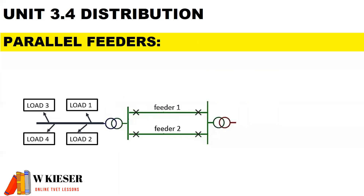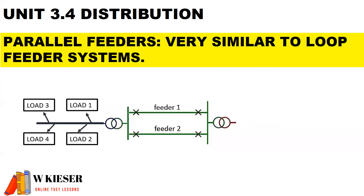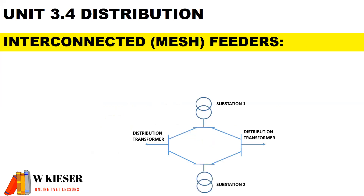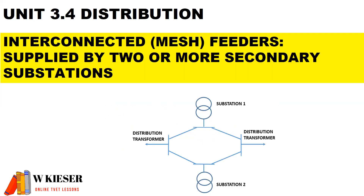For parallel feeders, they are very similar to loop feeder systems in terms of their advantages and disadvantages. For the interconnected or mesh feeder system, it is supplied by two or more secondary substations.